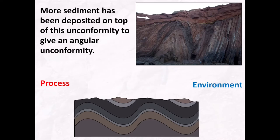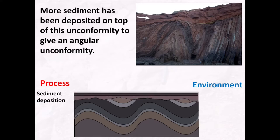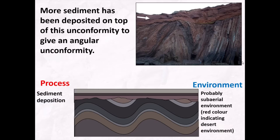On top of that unconformity, more sediment has been deposited along that sub-horizontal unconformable surface — horizontal beds of what looks like red sandstone. So we had another process of sedimentary deposition, and based on the red color of these rocks and what I think is some dune-scale cross bedding in the top right, I'm going to assume that the environment of deposition was sub-aerial, probably a desert or arid environment, indicated by the red iron-oxide-rich coloring.